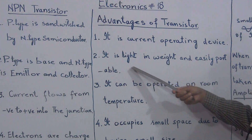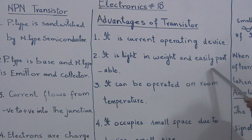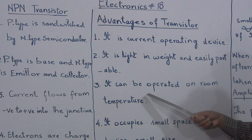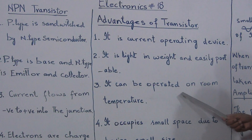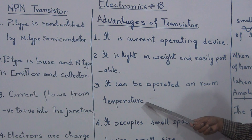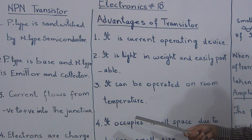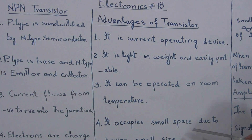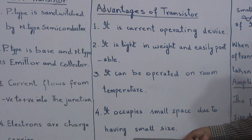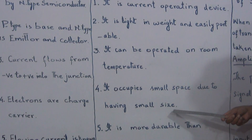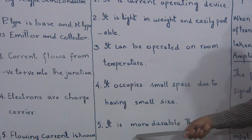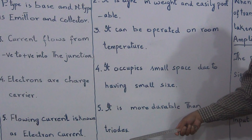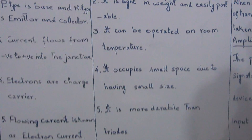Number 2: It is light and easily portable. Number 3: It can be operated at room temperature. Number 4: It occupies small space due to its small size. Number 5: It is more durable than triodes.